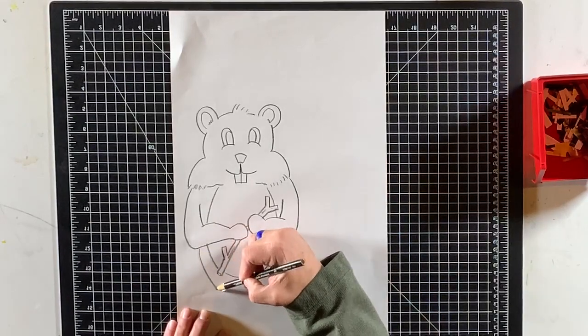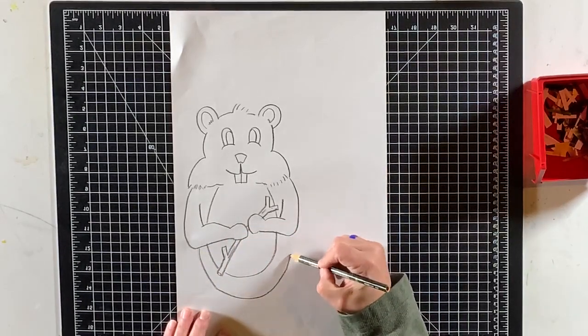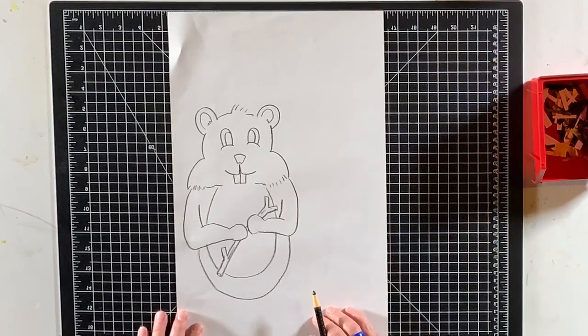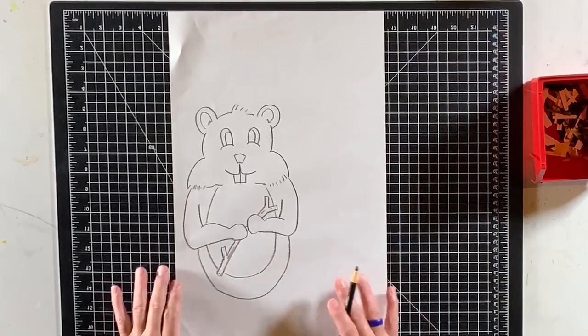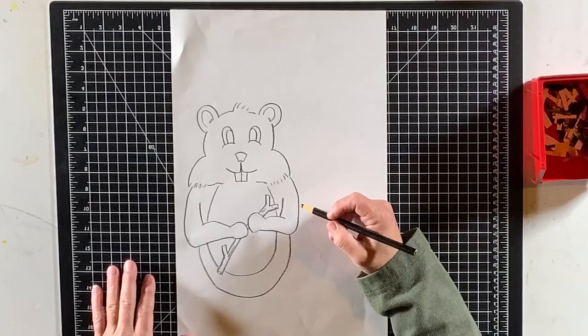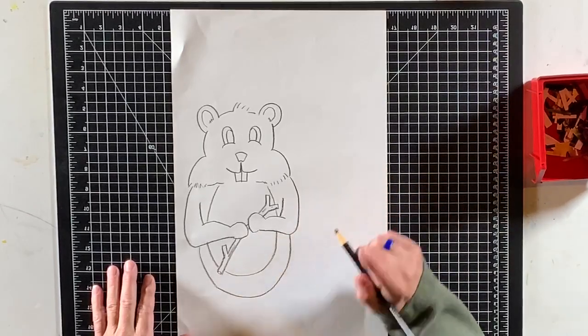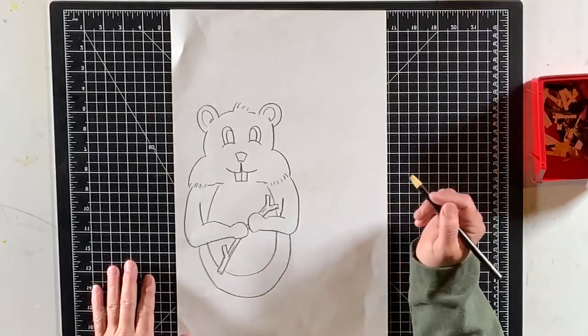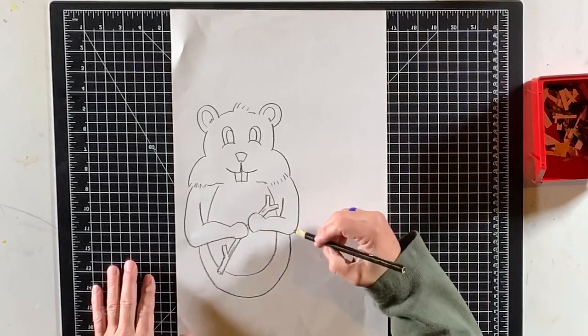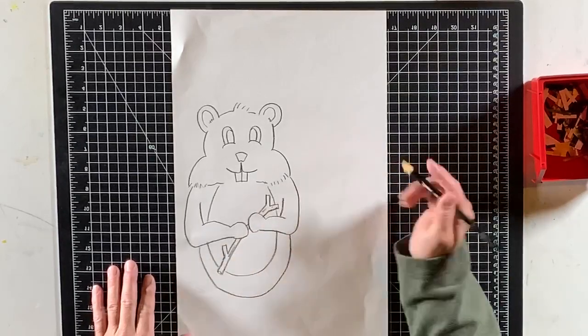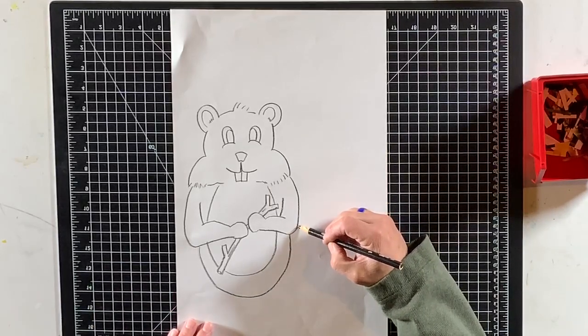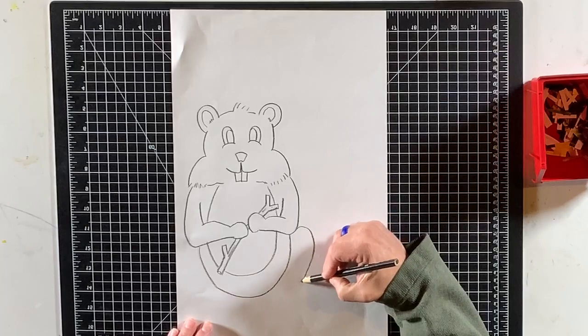I'm just gonna draw that, I've already got a head start. You know boys and girls what you don't always see are all the times I mess up before I finally get my beaver the way I want him to look, or her to look, for you guys. So I can have three or four or five or six of these in a sketchbook that you'll never ever see. You just see the finished one.